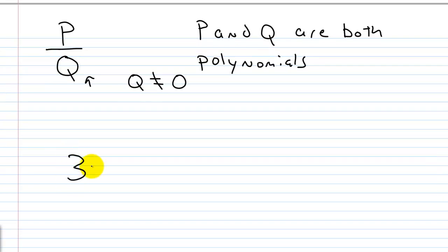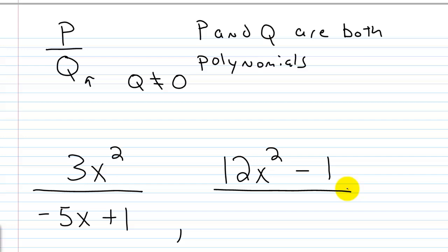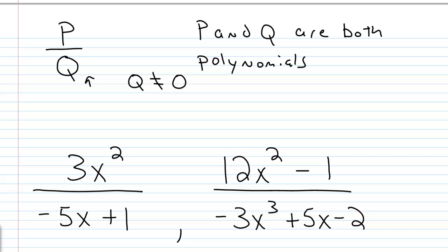Let's say you had something like 3x squared over negative 5x plus 1. This is a rational expression because it's the quotient of two polynomials — 3x squared is a polynomial, and negative 5x plus 1 is a polynomial as well. Another example: 12x squared minus 1 over negative 3x cubed plus 5x minus 2. These are both rational expressions. You just check that the numerator and denominator are each polynomials, and that you have division of one polynomial by another.